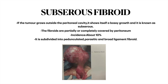Next, the subserosal fibroid. If the tumor grows outside the peritoneal cavity it shows a bossy growth and is known as the subserosal fibroid. The fibroids are partially or completely covered by the peritoneum. The incidence is about 10%. It is subdivided into pedunculated, parasitic, and broad ligament fibroid. This picture shows a subserosal fibroid.